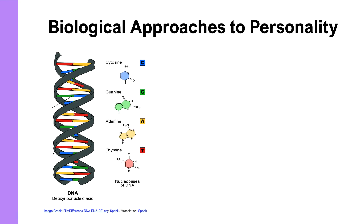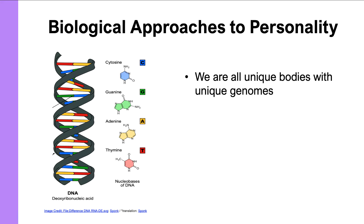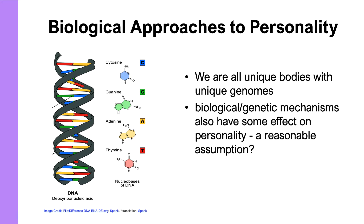We all have unique bodies. We differ in terms of hair color, eye color, skin color, size, shape, height, and weight. And we know that those are related to our genetics. So it doesn't seem too unusual to suppose that perhaps there are also some biological and genetic mechanisms that are related to differences in our behavior and our personality.